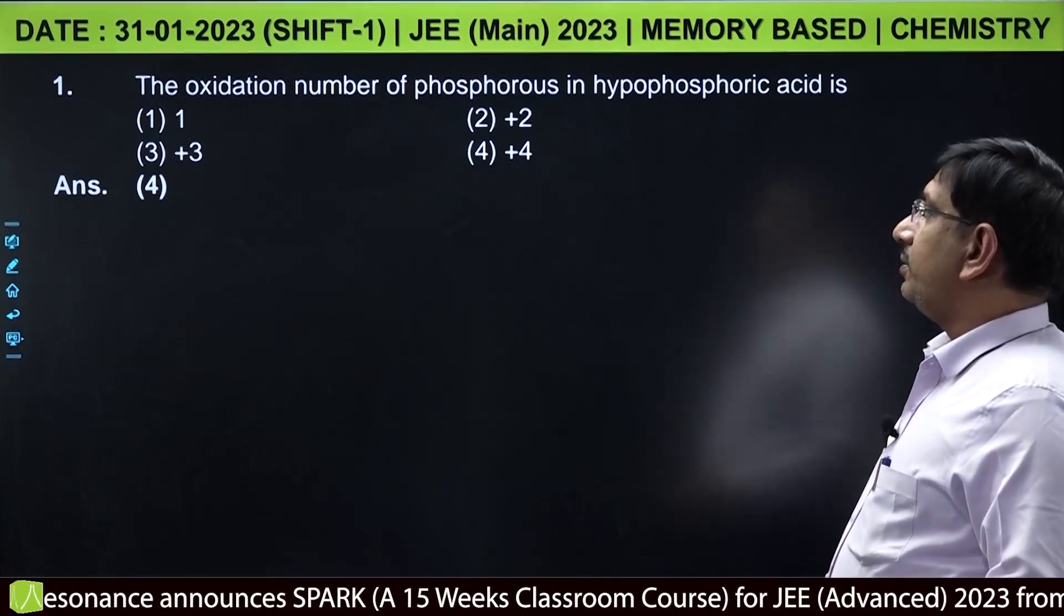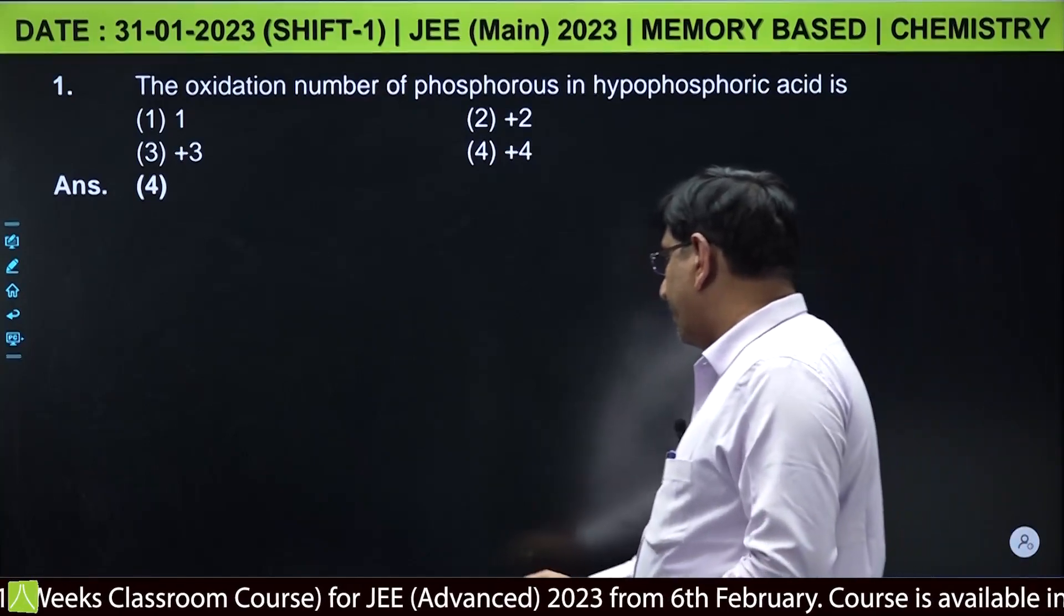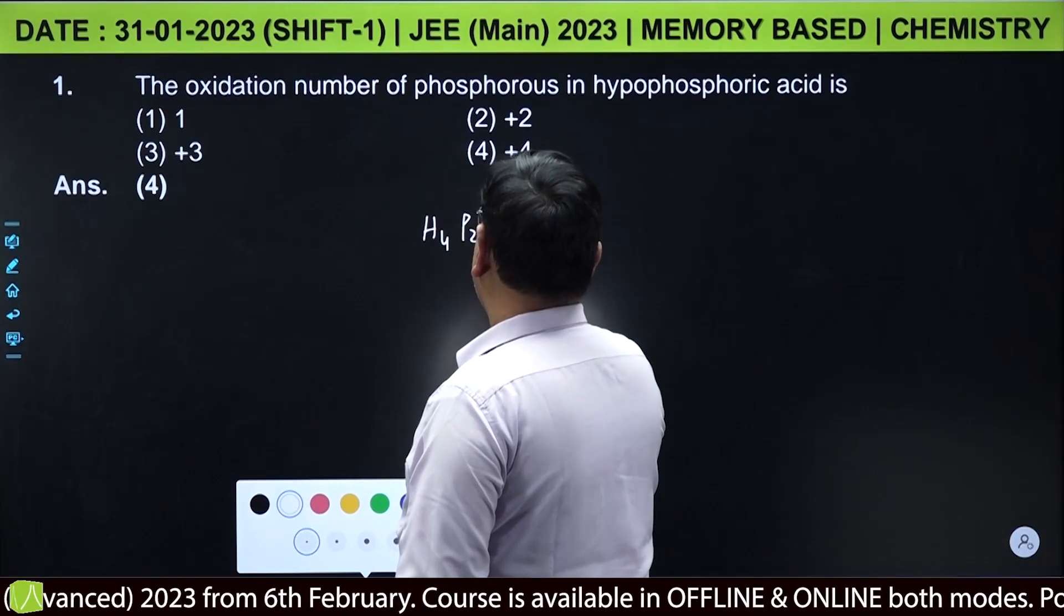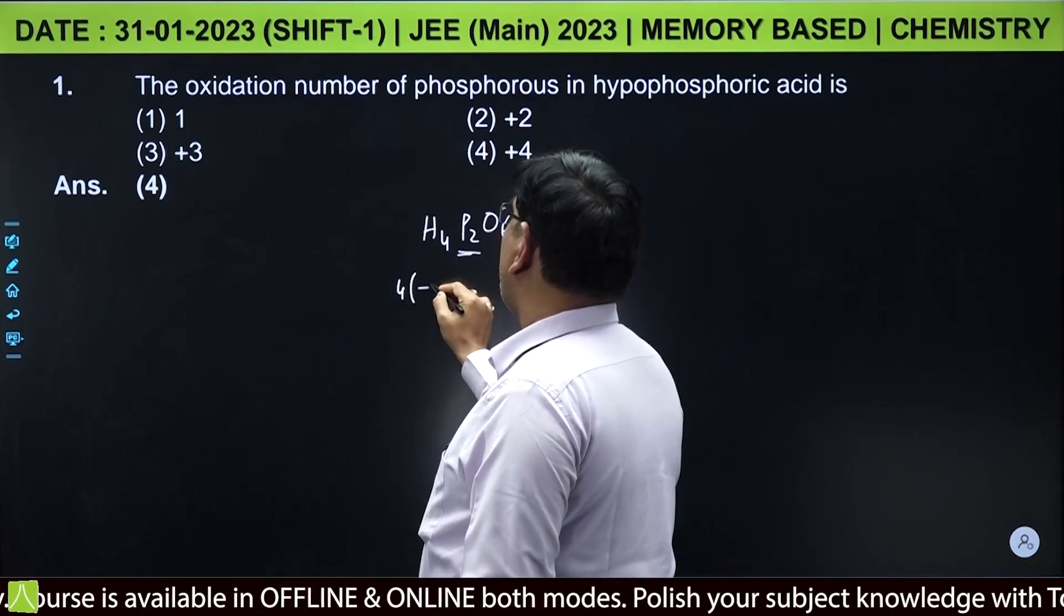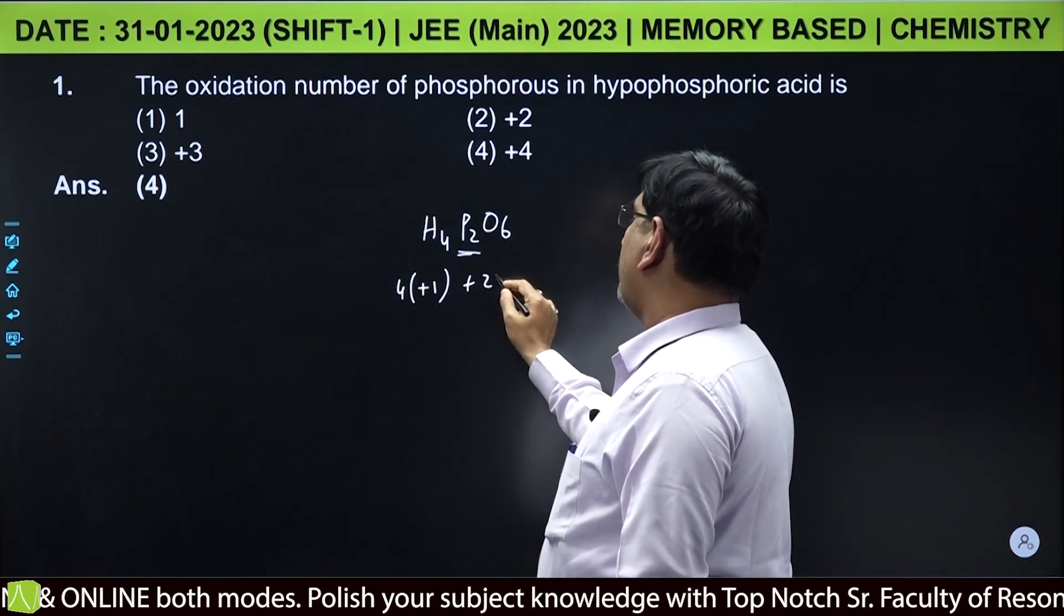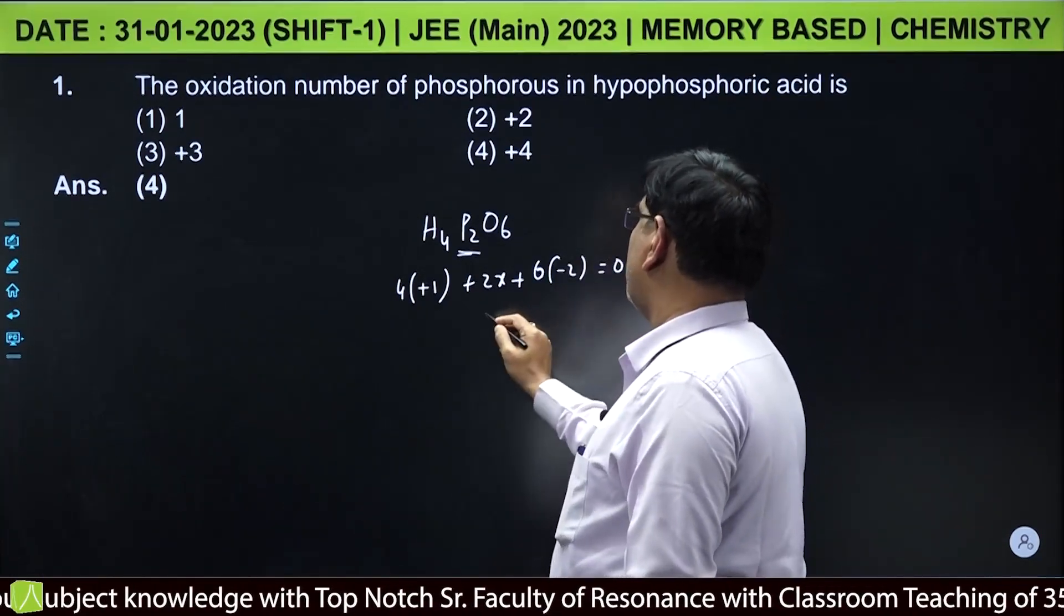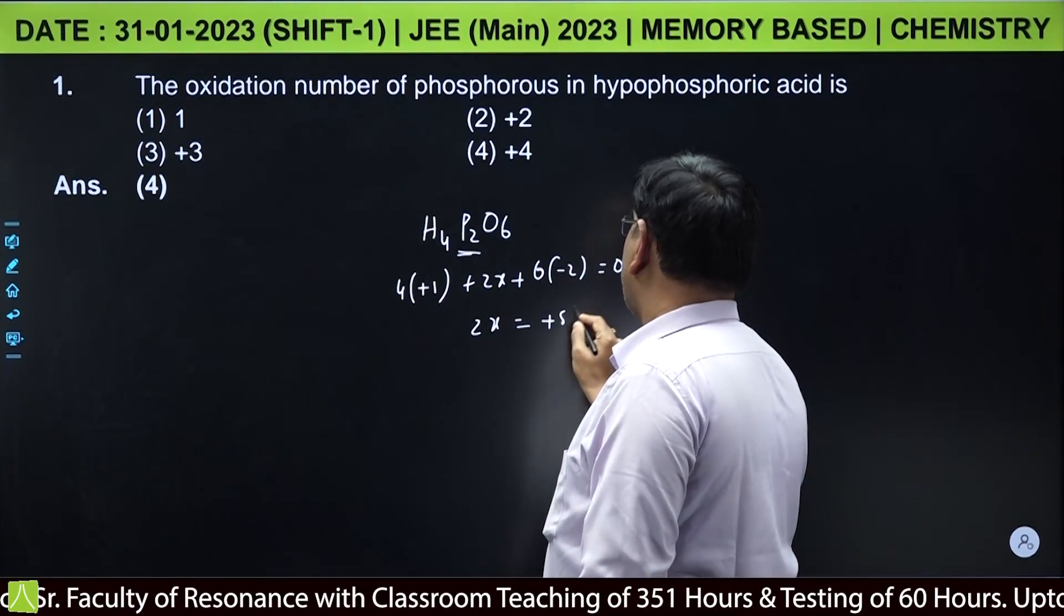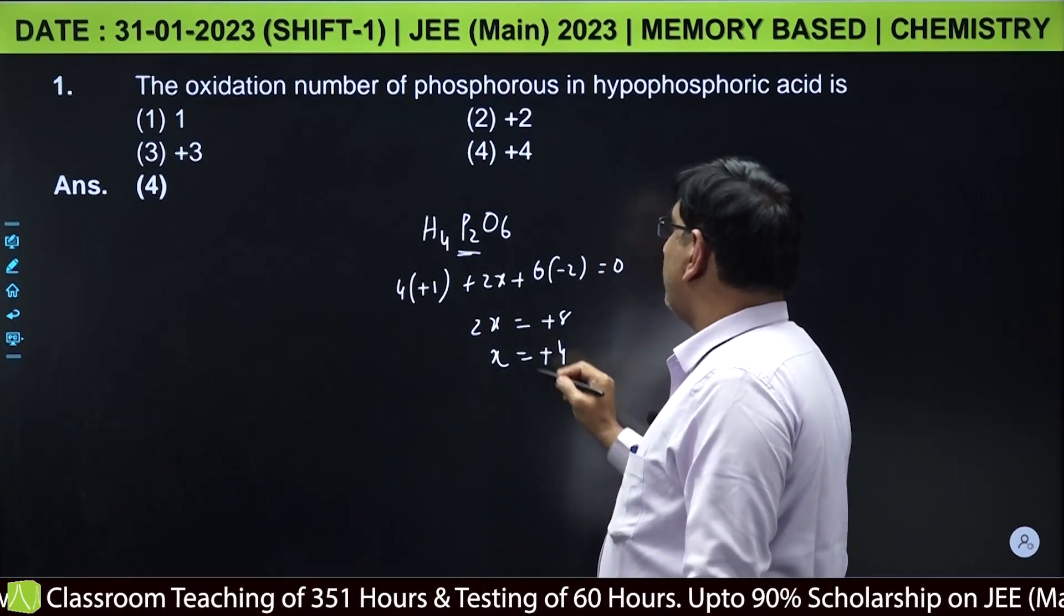The oxidation number of phosphorus in hypophosphoric acid. Hypophosphoric acid formula H4P2O6, phosphorus oxidation number calculate: 4 into hydrogen oxidation number plus 1 plus 2x plus 6 into minus 2 equal to 0, and 2x equal to minus 12 plus 4, 2x equal to plus 8, x equal to plus 4. So answer is plus 4.